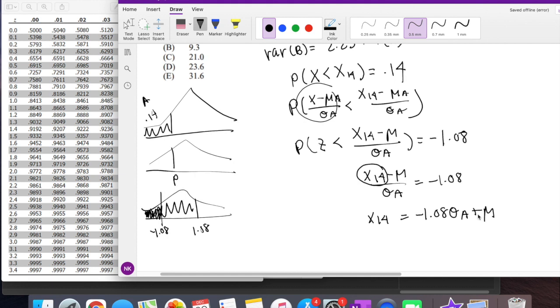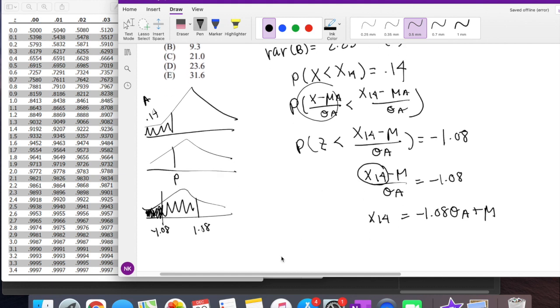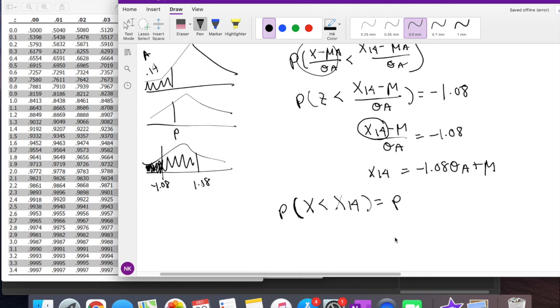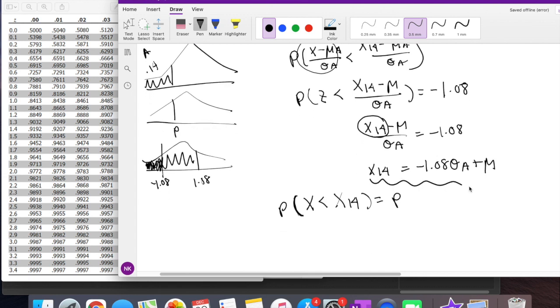Okay, so now we also know that the probability that X is less than some X 14th is equal to P. And P is what we're looking for. And then we know X 14th is given to be this. But let's normalize it first. So that's X minus mean of B over the standard deviation of B is less than X of 14 minus the mean of B over the standard deviation of B is equal to some P.